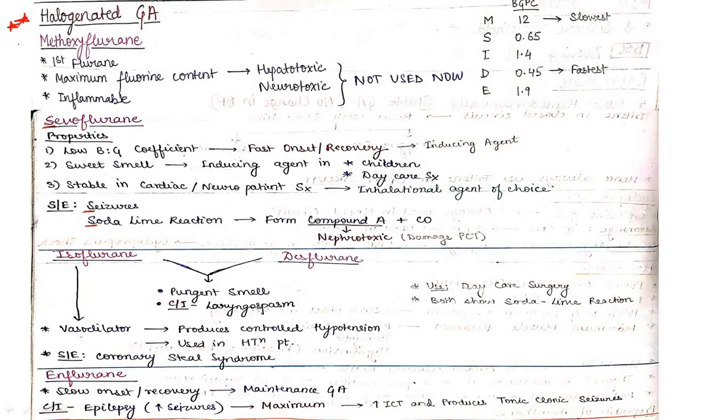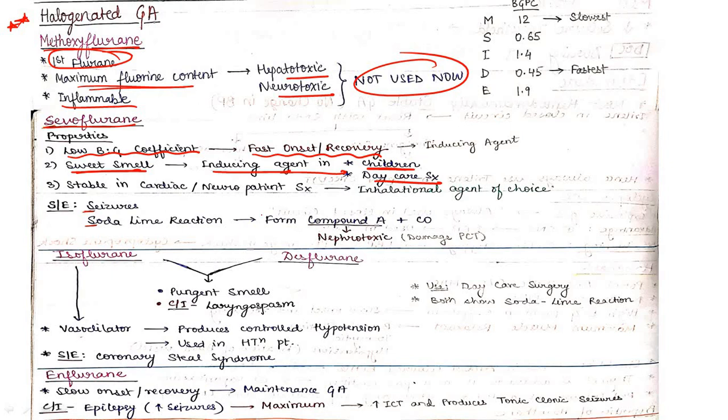In halogenated general anesthetics, first is methoxyflurane with maximum fluoride content - hepatotoxic and nephrotoxic, not used now. Next is sevoflurane with low blood gas partition coefficient, so fast onset and recovery. Has sweet smell so used as inducing agent in children and daycare surgery. It is anesthetic of choice in cardiac and neuro patient surgery, initial agent of choice in this type of patients.